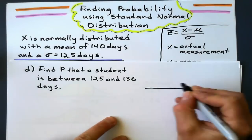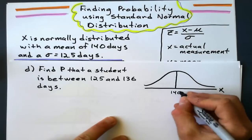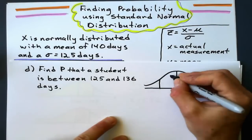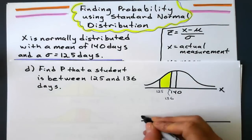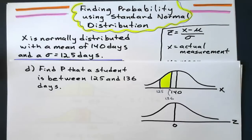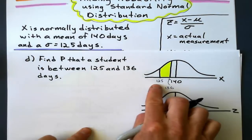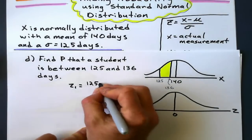Next up, find the probability that a student is between two values, 125 and 136. X curve, 140. That's the mean. 125, 136, somewhere around there. Both to the left of the mean, remember? So I'll have two Z values here, of course. Z curve, mean is 0, of course. Convert two Z values. So I'll call the first one Z1, 125. And I'll call the second one Z2.